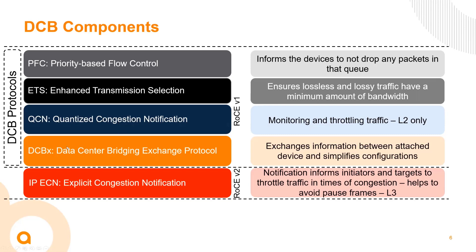Finally, the data center bridging exchange protocol (DCBX) is a protocol that helps exchange DCB information between attached hosts and targets, simplifying configuration on those ends. We also can't forget about IP ECN — IP ECN is leveraged in what we call a RoCE v2 solution, which includes a layer 3 hop. It is a notification protocol that informs initiators and targets of congestion across a layer 3 link, helping ask targets to slow down and throttle their traffic.